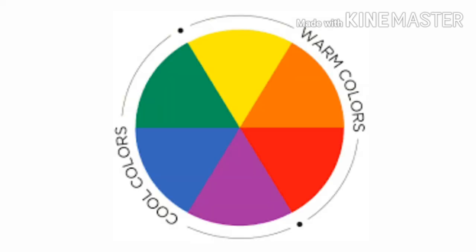Let us now study the color wheel. You can see that there are warm and cool colors in the color wheel.